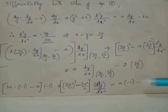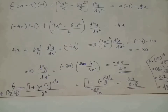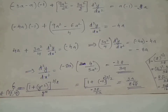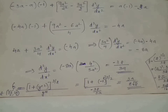Simplifying and taking LCM, we get −4a·(−1) + (9a² − 6a²)/4 multiplied by d²y/dx² equals −4a. Bringing 4a to the RHS gives (3a²/4)·(d²y/dx²) = −8a. Multiplying both sides by 4/(3a²), we obtain d²y/dx² = −32/(3a).